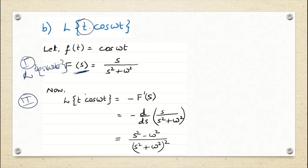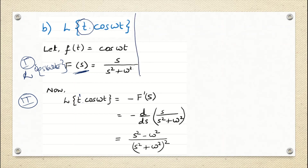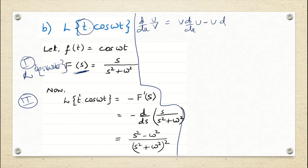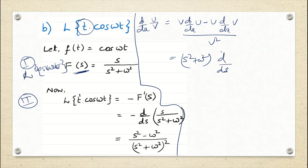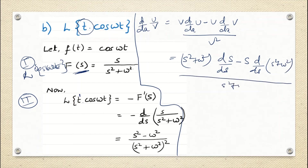The second step: see that cos(ωt) is multiplied by t to the power 1. So it is just minus d/ds of F(s). That means minus d/ds of s by (s² + ω²). We perform the same quotient rule d/dx of u/v: v·(d/dx of u) minus u·(d/dx of v) divided by v². Here v is the denominator s² + ω², d/ds of u where u is s, minus u·s·(d/ds of s² + ω²), divided by v² which is (s² + ω²)².